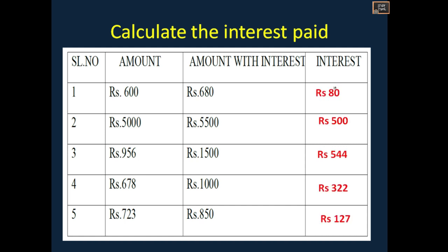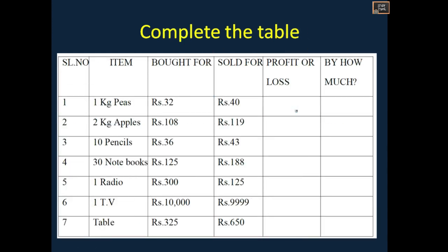To find the interest, you subtract the principal from the amount. 680 minus 600 = rupees 80. 5500 minus 5000 = rupees 500. 1500 minus 956 = rupees 544. 1000 minus 678 = rupees 322. 850 minus 723 = rupees 127.